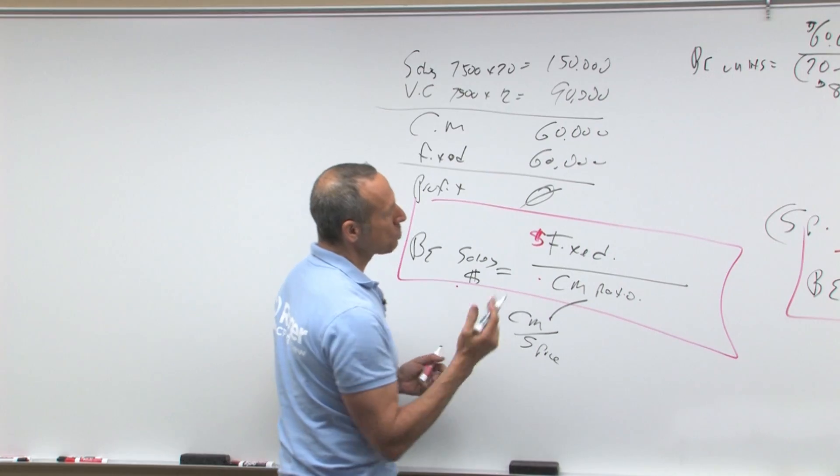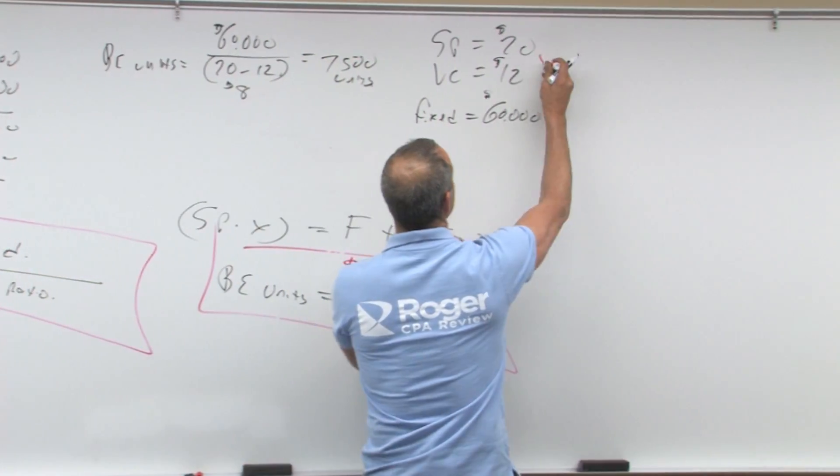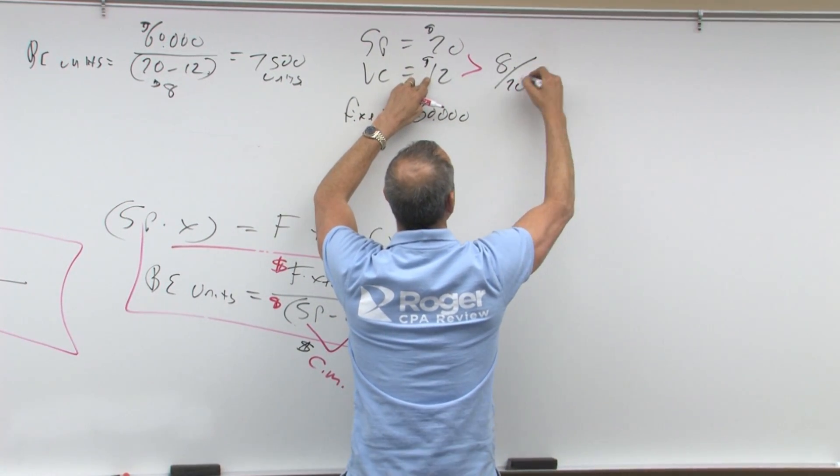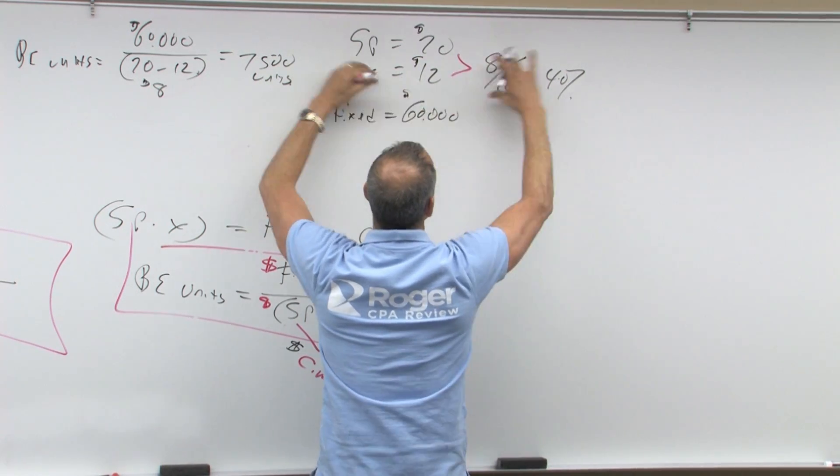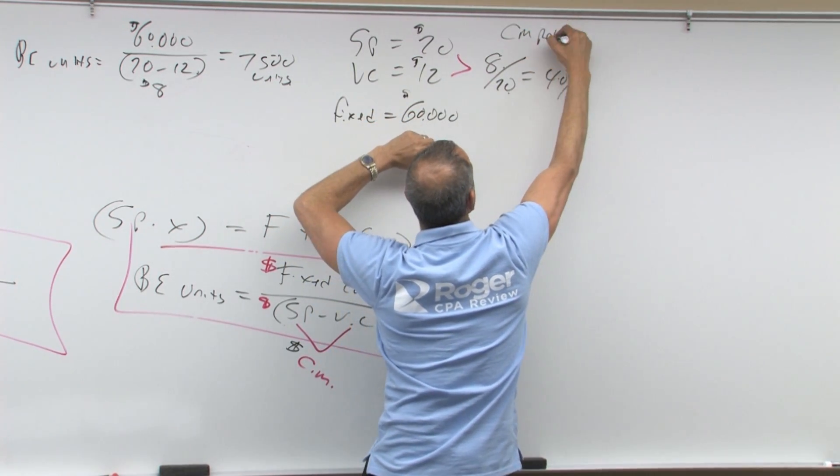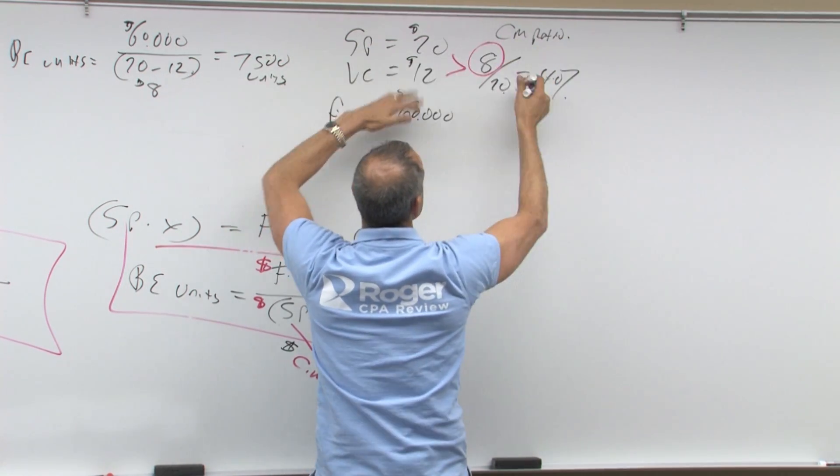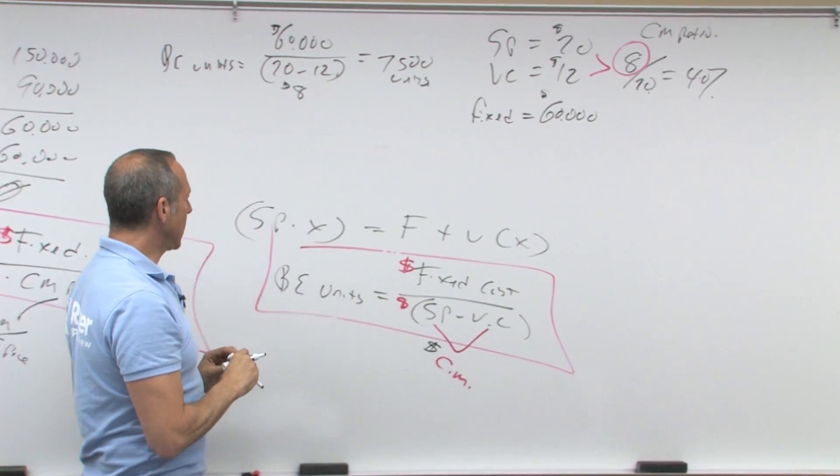CM ratio is going to be your CM over sales price. So in this case, let's come back over here. Here, your contribution margin is $8 over $20 is 40%. Four times two is eight, 40%. That's your CM ratio. Your CM is $8, but your CM ratio is eight over sales price, 40%. So bringing that back over here.